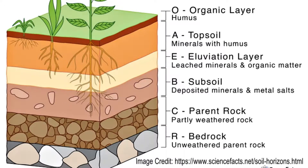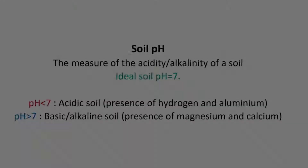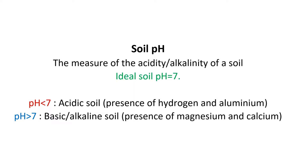Pedology is the study of soil. Soil pH is a measure of the acidity or alkalinity of a soil. The pH of a good soil should be more or less neutral, i.e. pH 7.